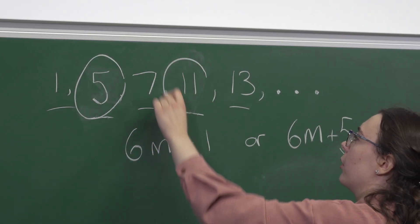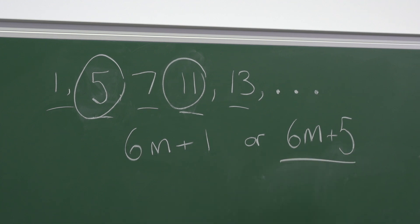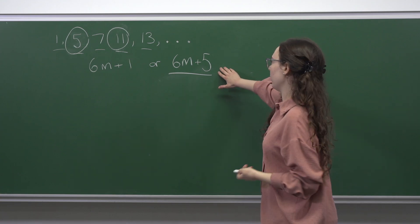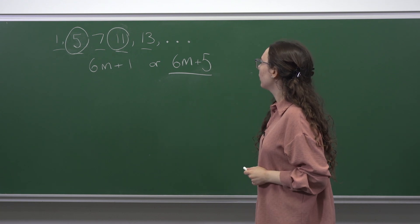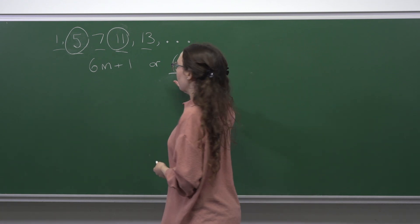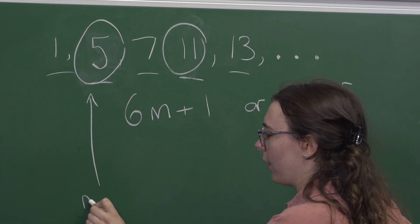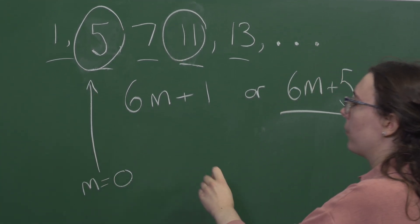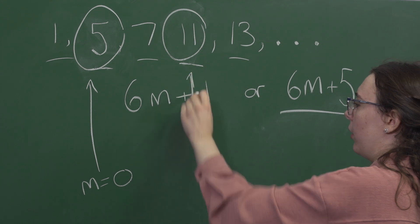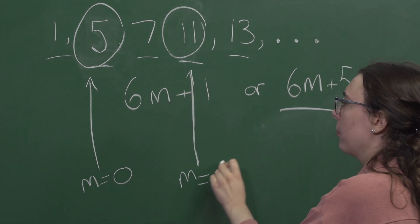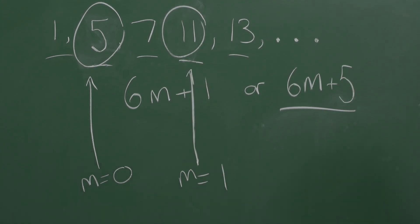So if we look at this formula 6m plus 5, well when m equals zero we get this term here, when m equals one we get this term, and so on.